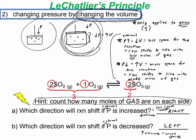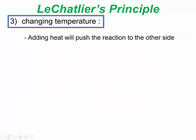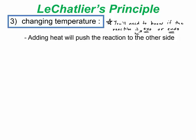The third thing you can do to shift equilibrium is change the temperature. You need to know if the reaction is exothermic or endothermic. If it's exothermic, think of heat as appearing on the right side as a product. If it's endothermic, think of heat as a reactant — the reactants require heat in order to make product.